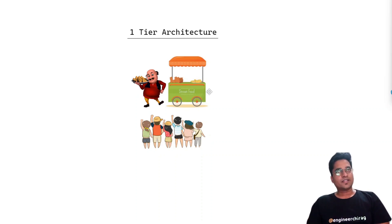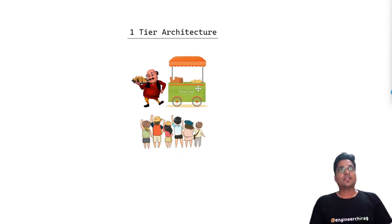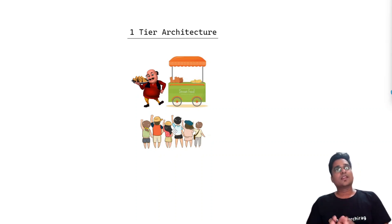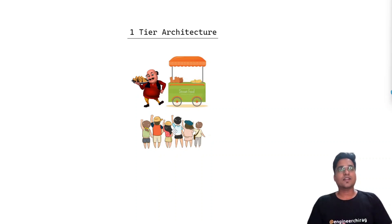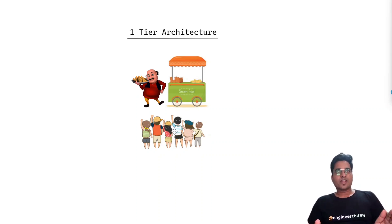Taking an example of 1-tier architecture: this is called 1-tier architecture. Now this is not ideal for a business to grow, because with more clients we will not be able to scale, so there are problems. We will try to resolve those problems by making a bigger restaurant-type setup, so that we can serve more clients and more people will come.